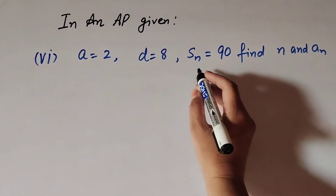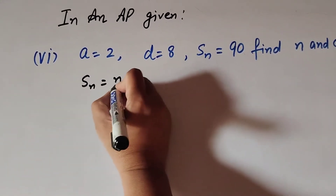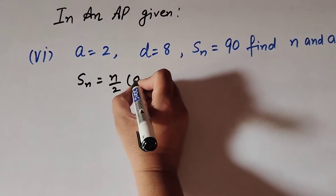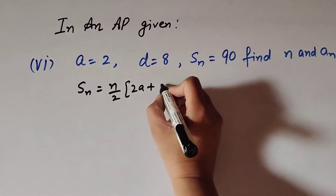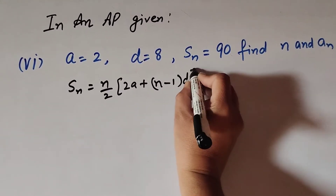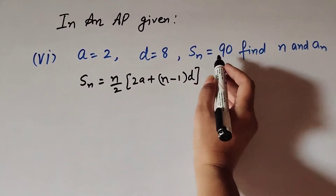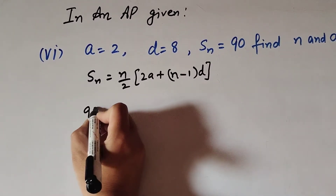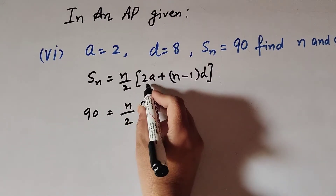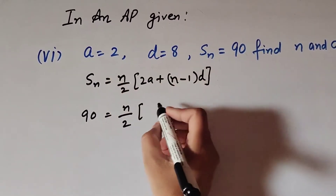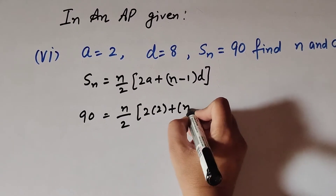Let's start. We know the formula to find the sum of n number of terms: Sn equals n over 2 into 2a plus n minus 1 times d. Sn is given as 90, so 90 equals n over 2 into 2a. Since a equals 2, we have 2 into 2.